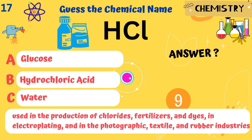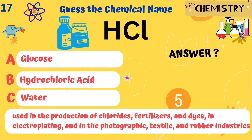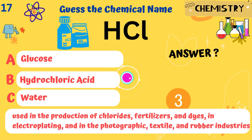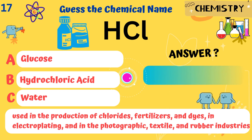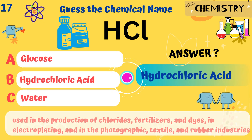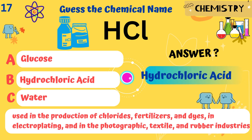HCl. It is used in the production of chlorides, fertilizers, and dyes, in electroplating, and in the textile and rubber industries. Answer: Hydrochloric acid.